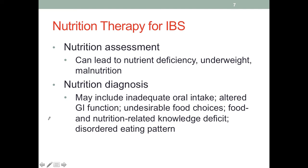For nutrition therapy, alternating between constipation and diarrhea could lead to nutrient deficiency, unintentional weight loss, and malnutrition — things we need to be concerned with. Problems for the nutrition diagnosis can include inadequate intake, altered GI function, undesirable food choices, knowledge deficit, and disordered eating pattern. Research has also discussed how disordered eating and IBS symptoms can be interrelated.